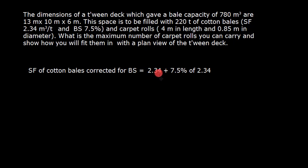So we can write 2.34 plus 7.5% of 2.34, and this will give me 2.5155 cubic meters per ton. You can simply calculate with the help of a calculator.